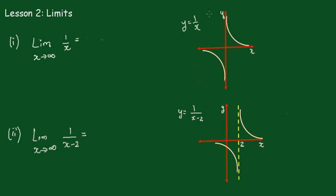You'll see that as x gets very very large, the y value is going to get very very small, so the limit that approaches is going to be equal to 0. And that'll be from both directions — from either going in a positive direction, positive infinity, or negative infinity.